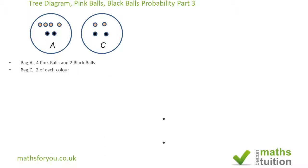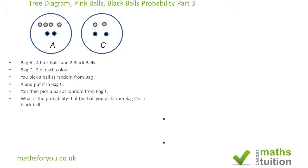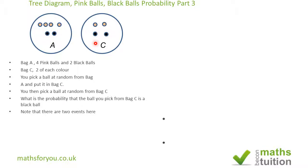The question is: you pick a ball at random from Bag A and put it into Bag C. Then you pick a ball at random from Bag C, and we want to know the probability that you pick a black ball, having transferred a ball from Bag A to Bag C. There are two events: picking a ball from Bag A and picking a ball from Bag C.